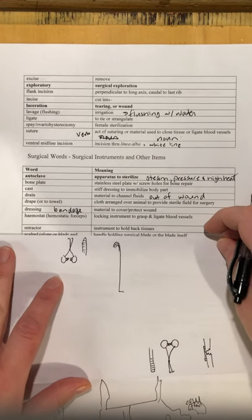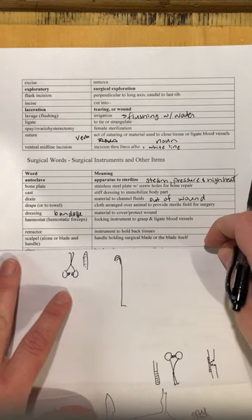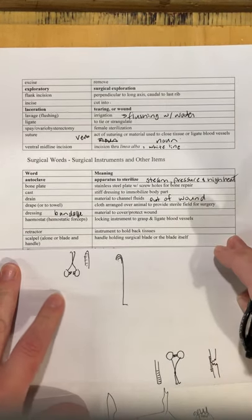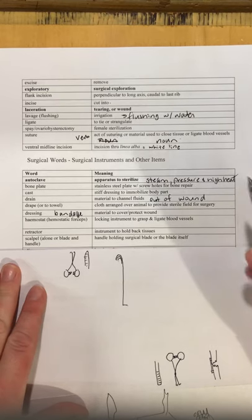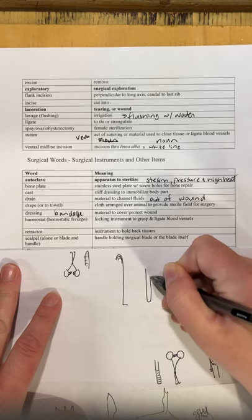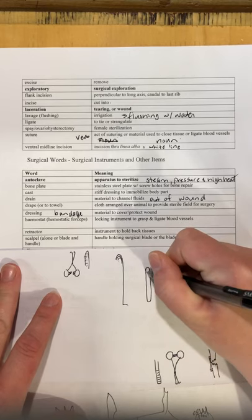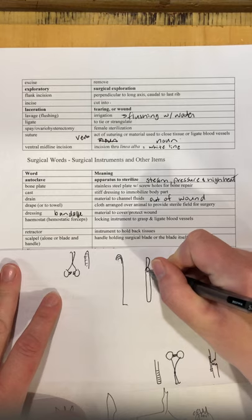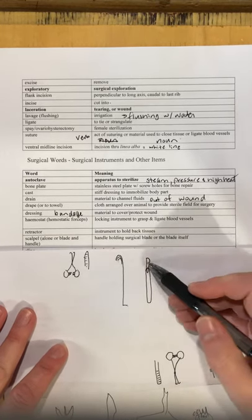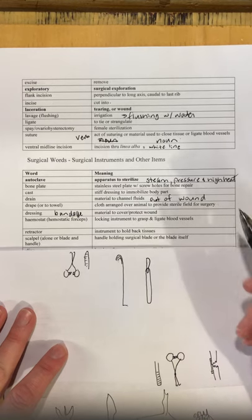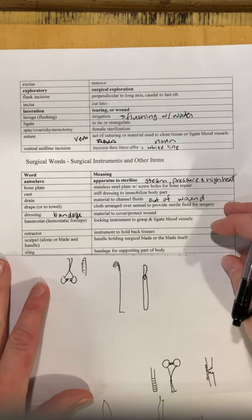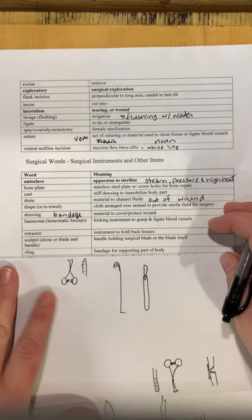The word 'scalpel' can refer to the scalpel blade or the blade and handle together. You may have seen a scalpel in science classrooms if you've done dissections — it basically looks like a blade attached to a handle. Scalpels are extremely sharp, so please be careful when handling scalpel blades.